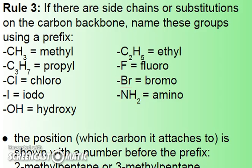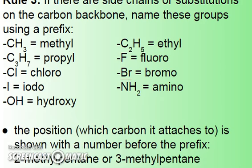Halogens are another common substitution in place of a hydrogen, named fluoro, chloro, bromo, iodo. Amine groups are also very popular — NH2 is called amino, which is exactly where the name 'amino acid' comes from. And then the OH group is a hydroxy group, which we see with alcohols and also showing up with carboxylic acids.